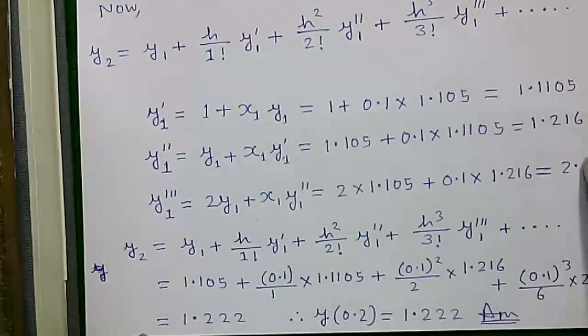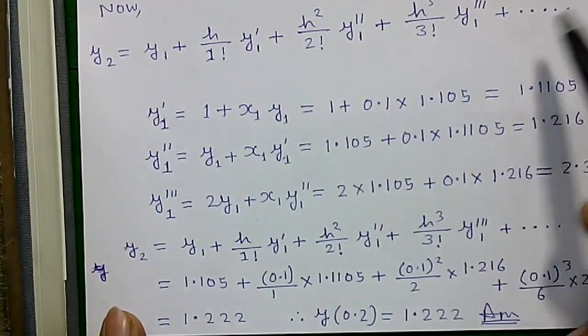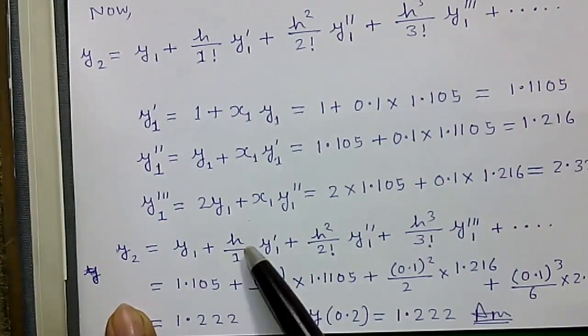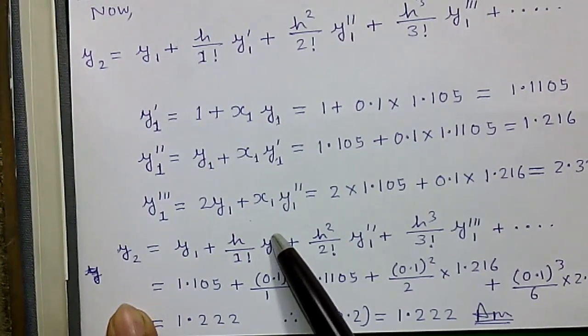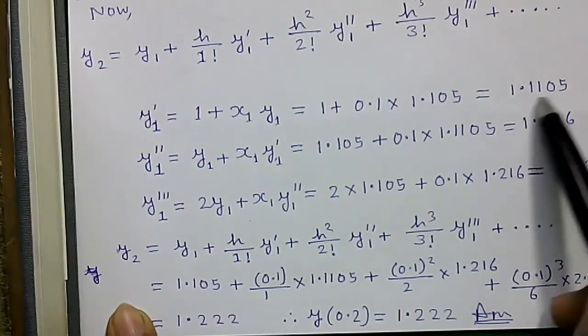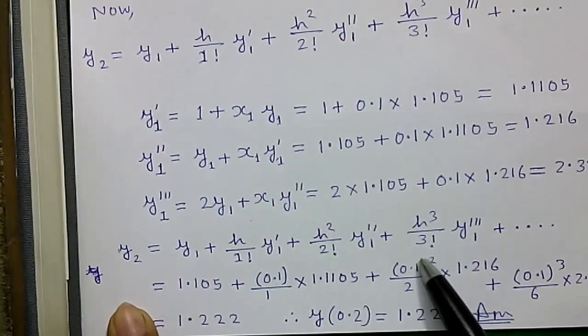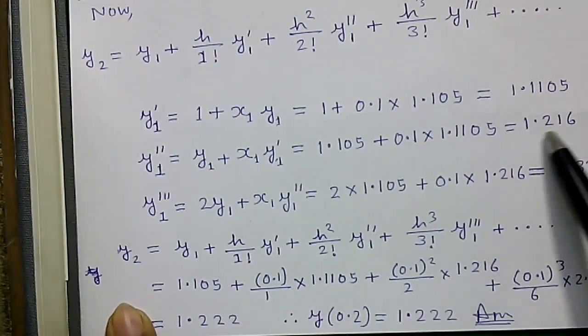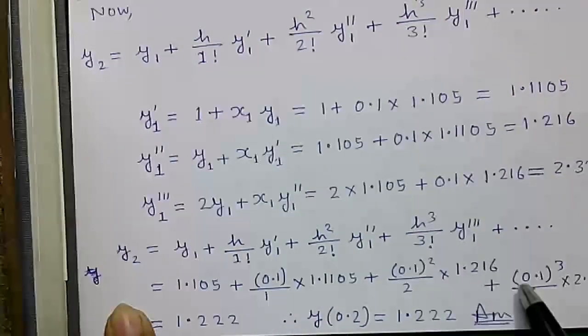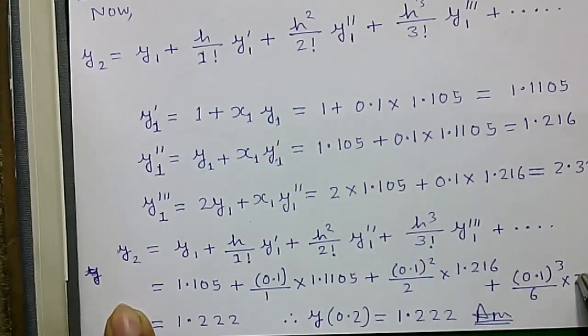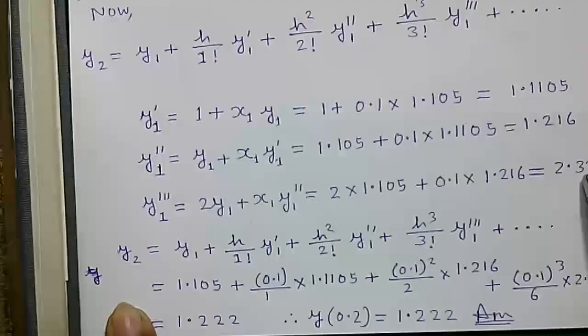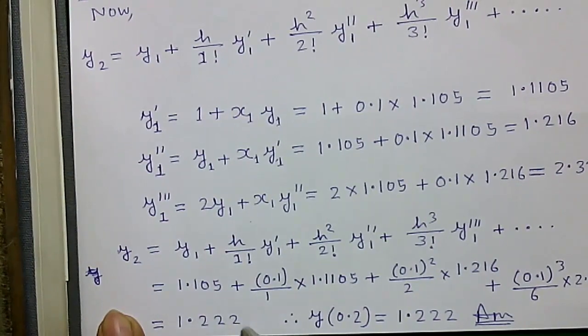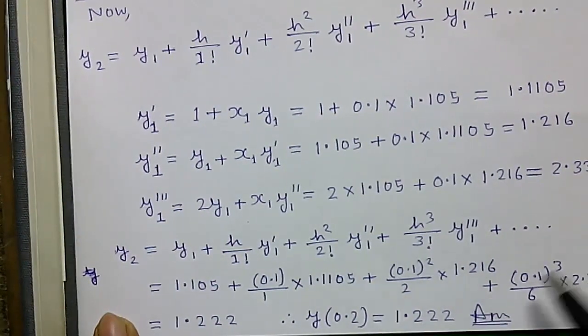Now we will put the obtained values in Taylor's formula. So we will get y1 plus h/1!·y'1 this value, plus h²/2!·y''1 which is this value, plus h³/3!·y'''1 that is this value. So we will get 1.222. So y(0.2) = 1.222.